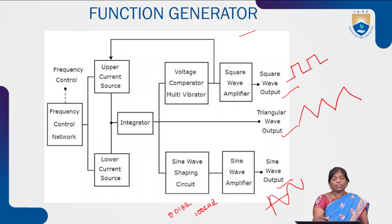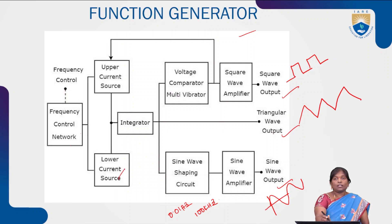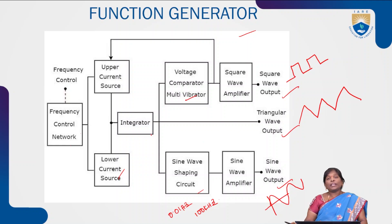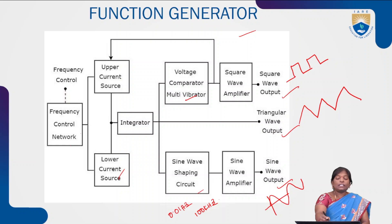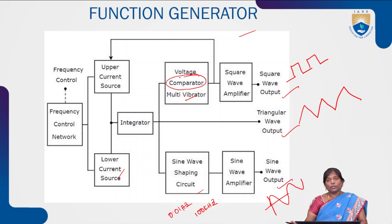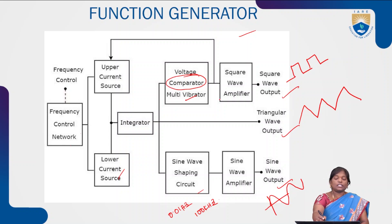The main blocks present in the function generator are: the frequency control network, upper current source, lower current source, and voltage comparator multivibrator. The comparator is mainly used to compare two input signals and according to them produce the output.